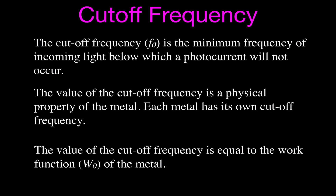The light will not have enough energy to overcome the work function. The value of the cutoff frequency is a physical property of the metal. Each metal has its own cutoff frequency — just like density, every material has its own density. It's a physical property due to the type of material.